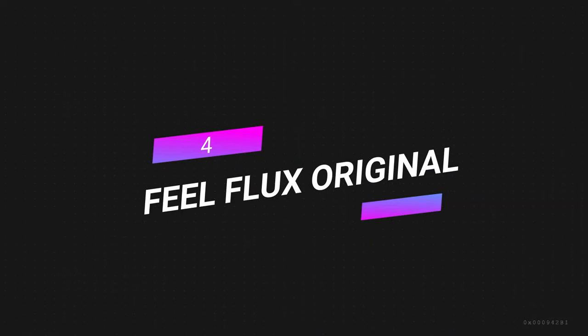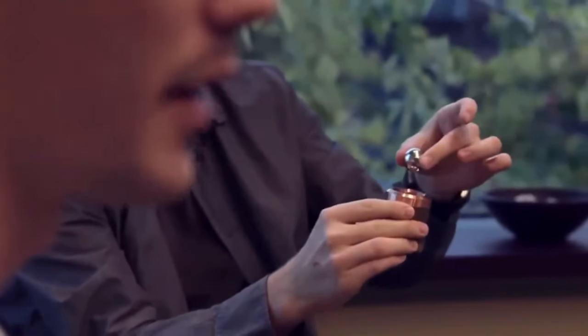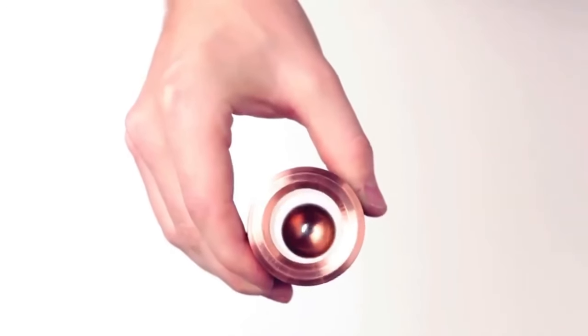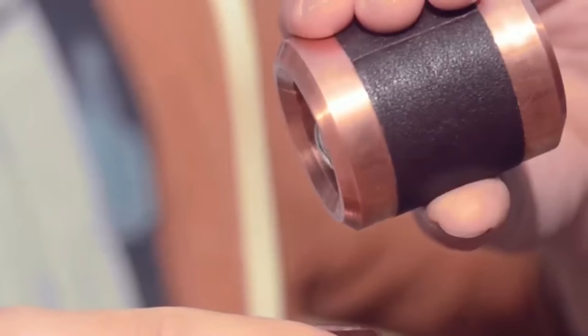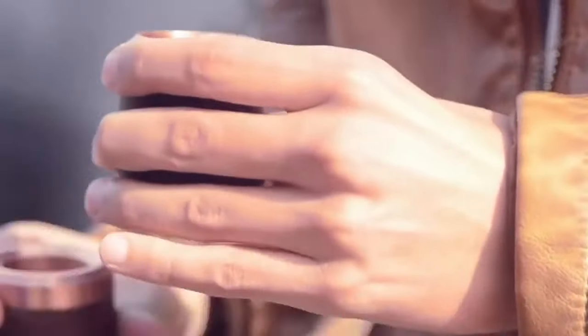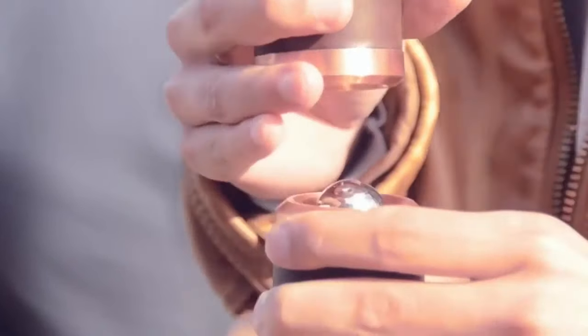Number 4. Feel Flux Original. The Feel Flux Original is a fascinating gadget that plays with the power of magnets in the most captivating way. It consists of a sleek metal tube and a small metal ball inside. When you drop the ball into the tube, it doesn't just fall, it defies gravity.